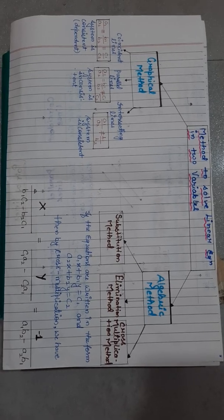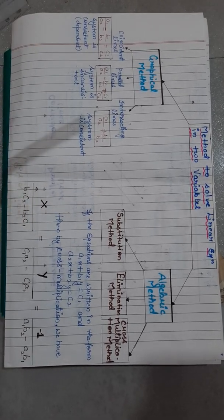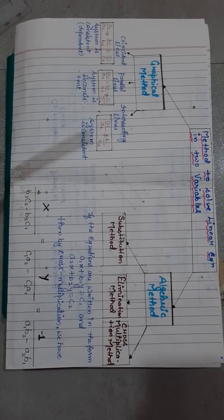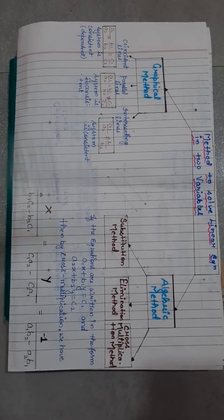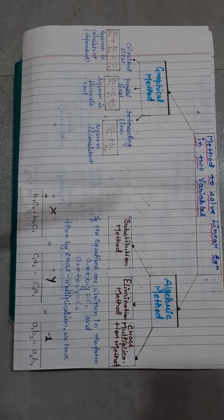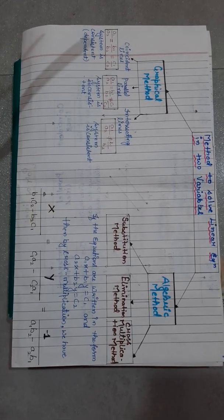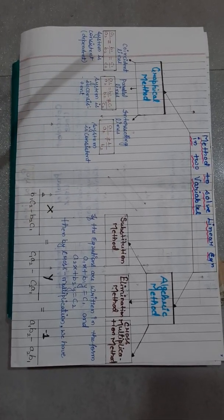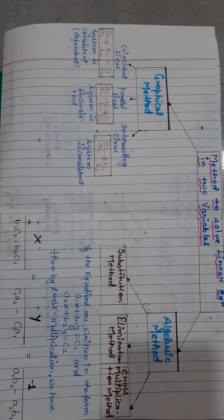Now we discuss methods to solve linear equations in two variables. The first method is the graphical method. In the graphical method, there are three possibilities: coincident line, parallel line, and intersecting line.